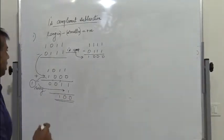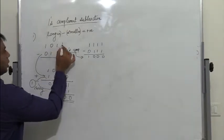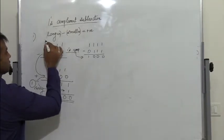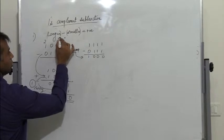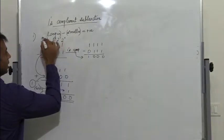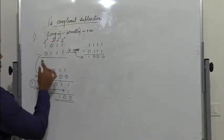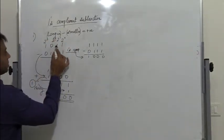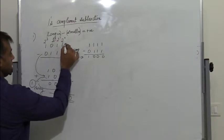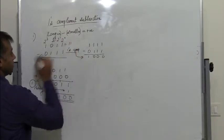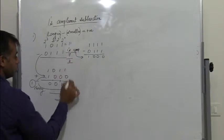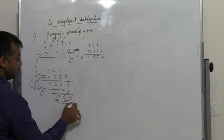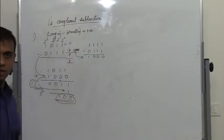Let us verify: 1011 has weights 2 power 0, 2 power 1, 2 power 2, and 2 power 3, giving us 8 plus 2 plus 1 which is 11. And 0111 is 7. So 11 minus 7 gives 4, and we have got the answer 0100.